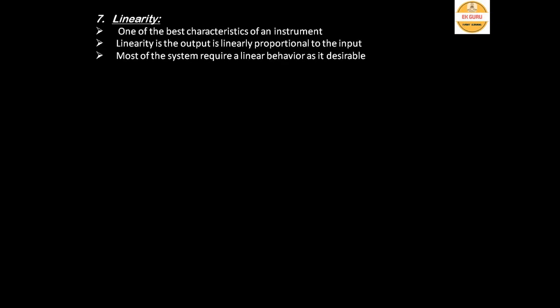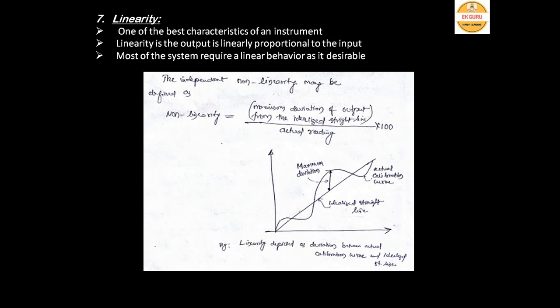Linearity is one of the most important characteristics of an instrument. The output should vary linearly with respect to the input. For an instrument, instead of linearity they often represent the non-linearity at particular points. Non-linearity is defined as the maximum deviation of the output from the idealized straight line, divided by the actual reading, multiplied by 100.